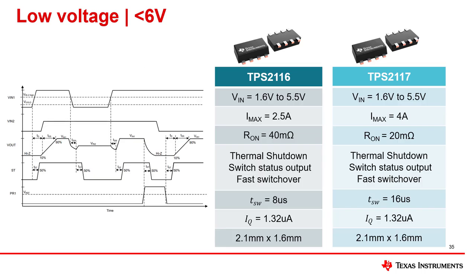The TPS2116 and TPS2117 devices offer a fast switchover, highlighted here, to ensure downstream loads do not experience a loss of voltage below their under-voltage thresholds. When the device determines it is time for a switchover, the output will only be disconnected from the input for the switchover time. In the case of the TPS2116, this is 8 microseconds typical.